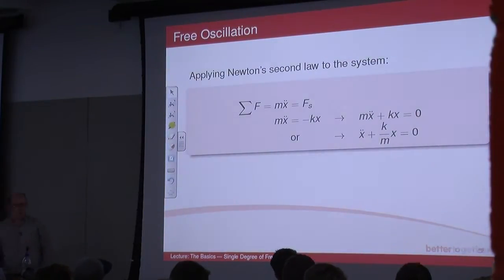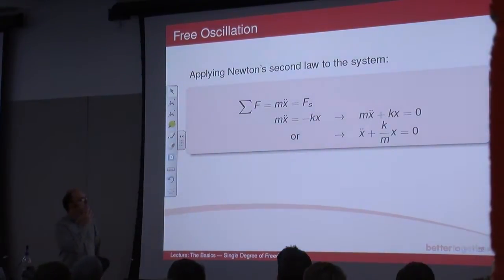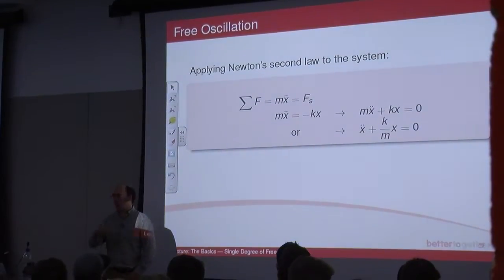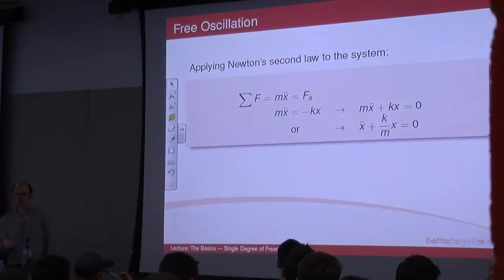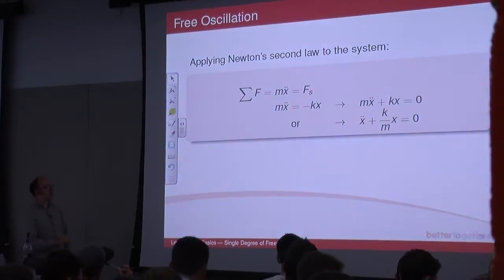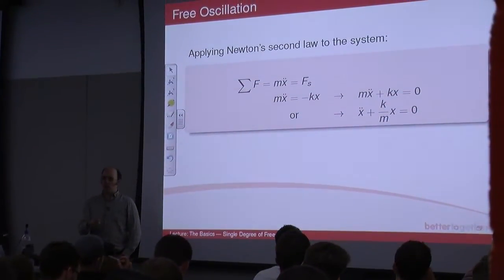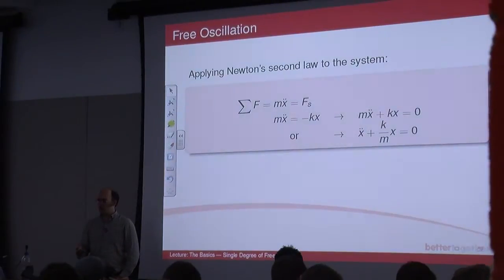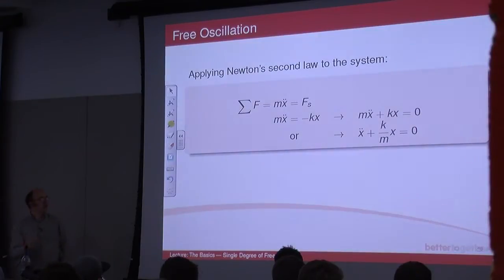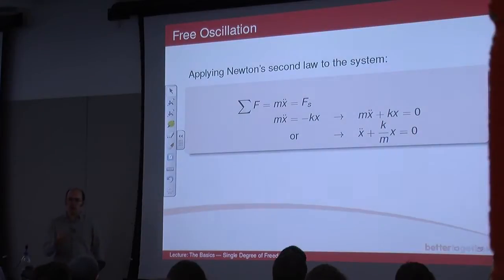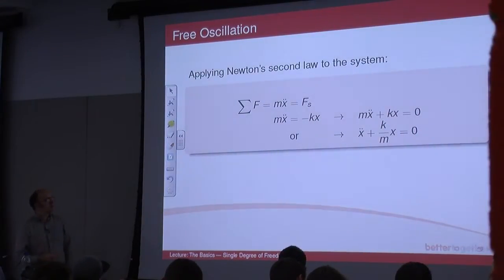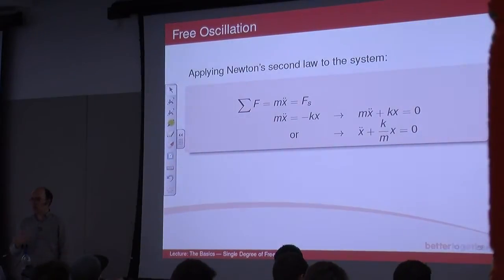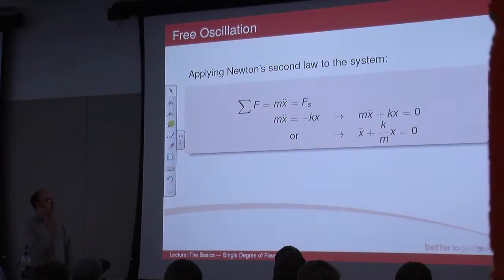Let's apply Newton's second law. The sum of all the forces equals mass times acceleration, so there's mx double dot — mass times acceleration — and the only force being applied to that system is the spring force. The force on the spring always opposes motion, so we've got a minus sign, and we've got a stiffness k. The force in the spring is k times the deflection x. So we've got ma equals minus kx, and there's no other forces on the system.